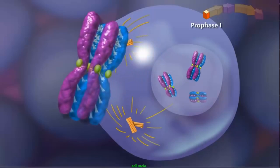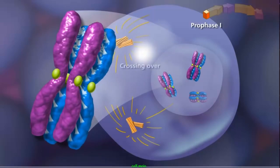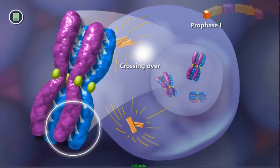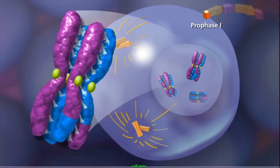Once this structure is formed, the second event, called crossing over, can occur. During crossing over, a physical exchange between chromosome segments of non-sister chromatids occurs, increasing genetic diversity.